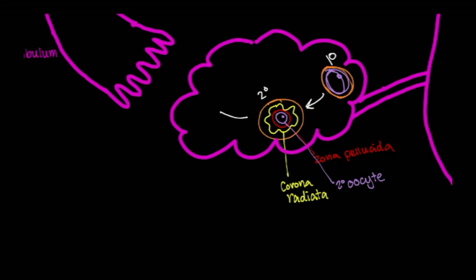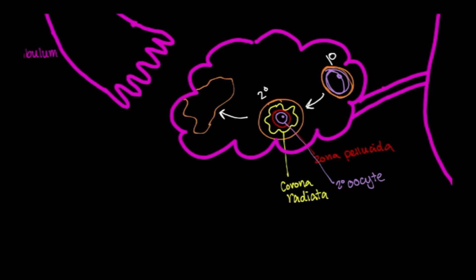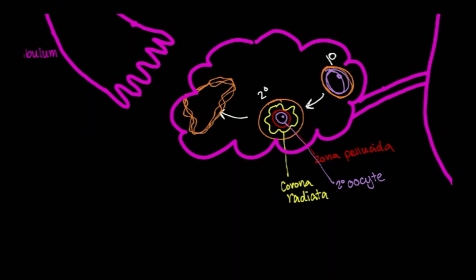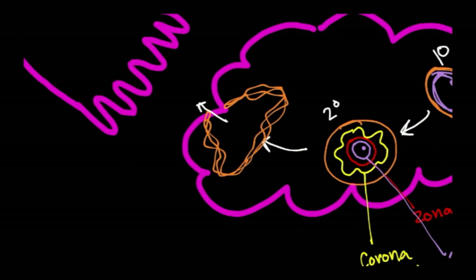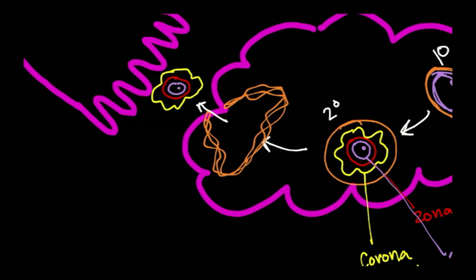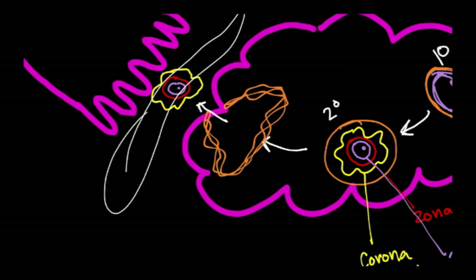At this point, the follicle will release the egg into the peritoneal cavity. Into the peritoneal cavity right here. Let me draw that out right here. It's the corona radiata, the zona pellucida, and the oocyte right here. It is now within the peritoneal cavity.